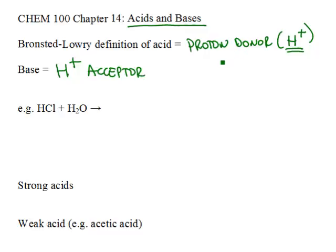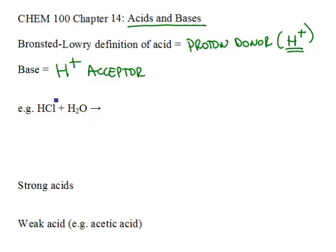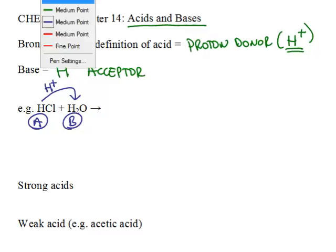So whenever you have an acid and a base reacting, for example, hydrochloric acid reacts with water. The best way to figure out these products is to use the definition of acids and bases. And we're going to draw a little arrow, always starting from the acid, pointing towards the base. And the arrow represents the transfer of the H+.